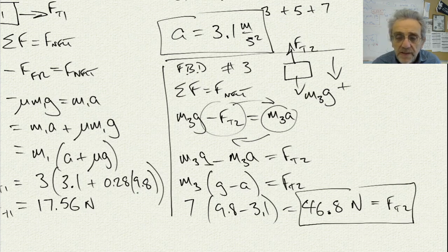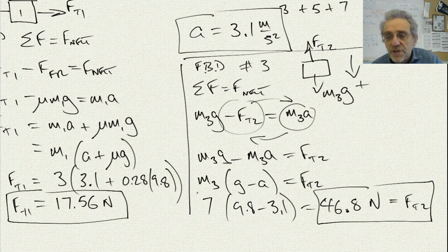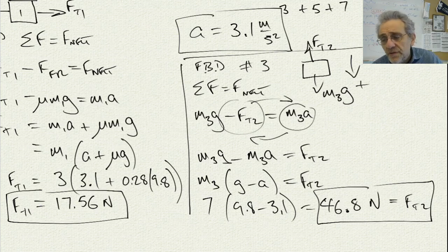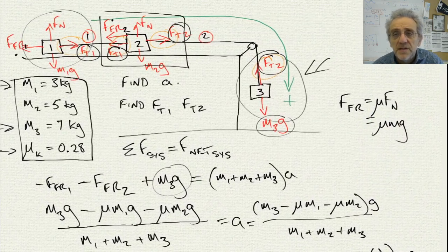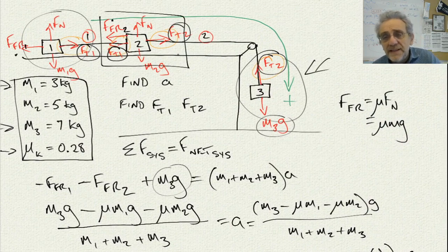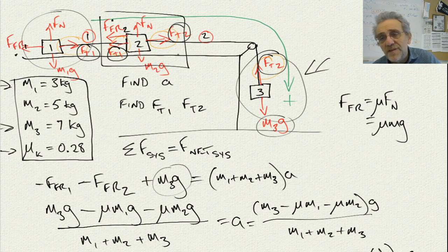So you see, I was able to calculate the two tensions. And also, notice that the tension on the second cable is much greater than the first one. And that makes sense because everything is moving on top of the table. Everything is moving to the right. So obviously, FT2 has to be bigger than FT1.